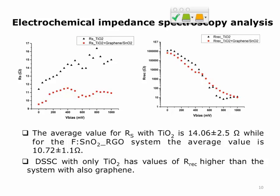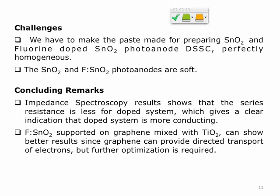From impedance spectroscopy, the graphene-loaded samples show lower series resistance as expected, confirming higher conductivity. However, from the recombination resistance we cannot draw a clear conclusion: at higher bias voltages we see better recombination resistance for the graphene samples, while at lower bias the recombination resistance is lower. So the recombination behavior remains inconclusive.